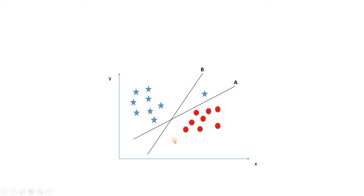Now suppose I have this type of condition — tell me whether you would select line A or line B. Some of you might say B because line B has a huge marginal gap between nearest elements, even though there is one misclassification happening. Others would choose A because for line A, all star class data points are on one side and all red data points are on the other side — no mixed case. For line B, one star point is on the wrong side while the rest are on the correct side.